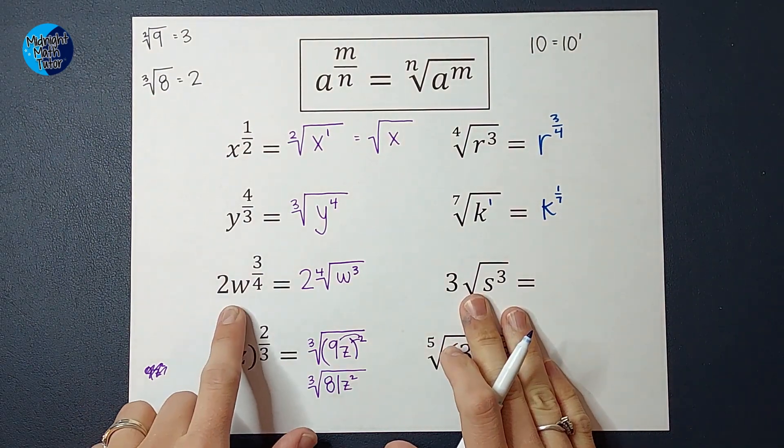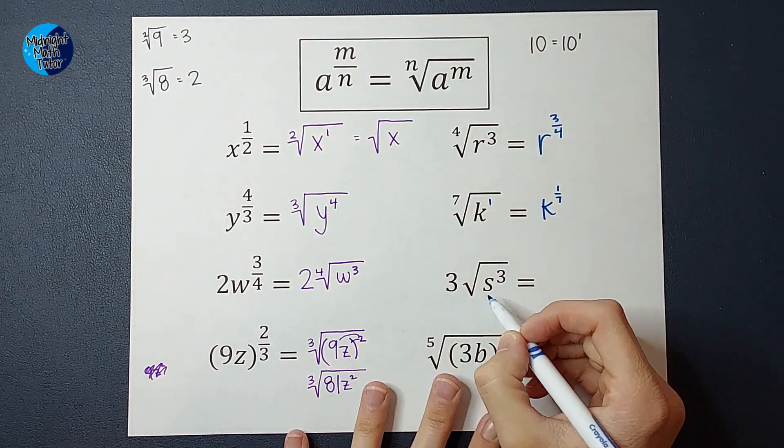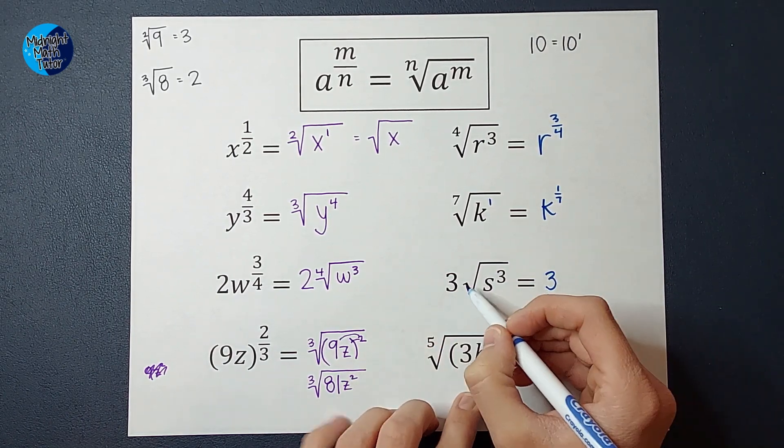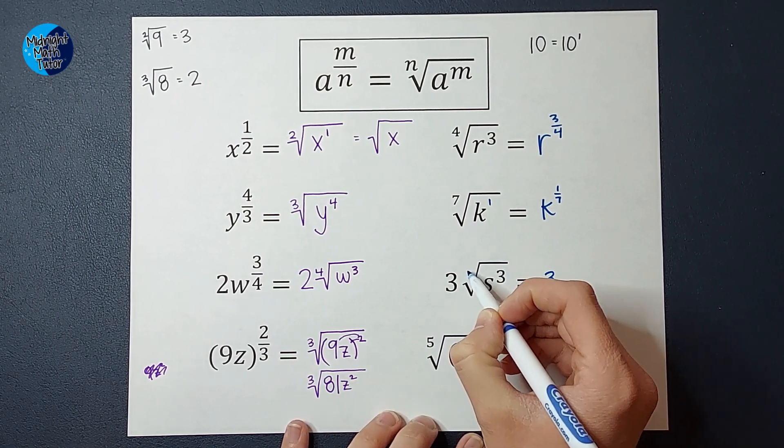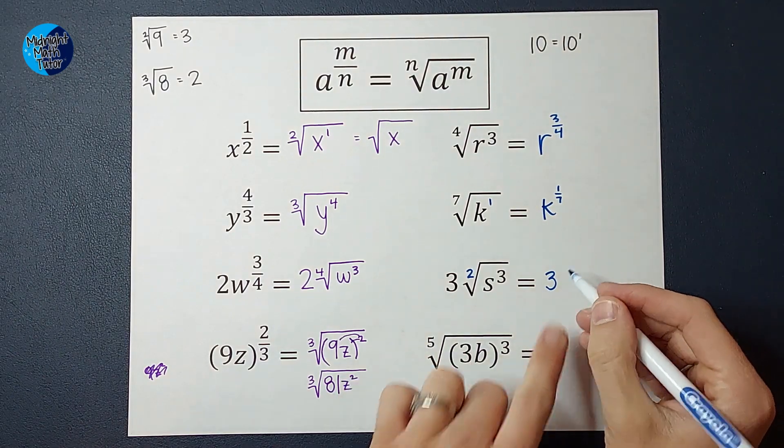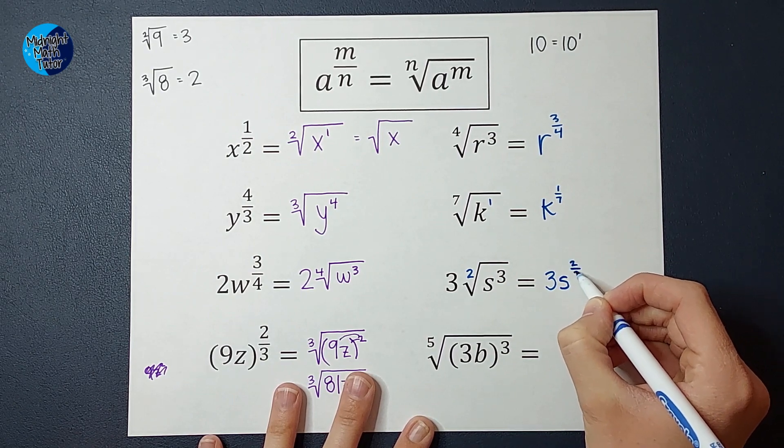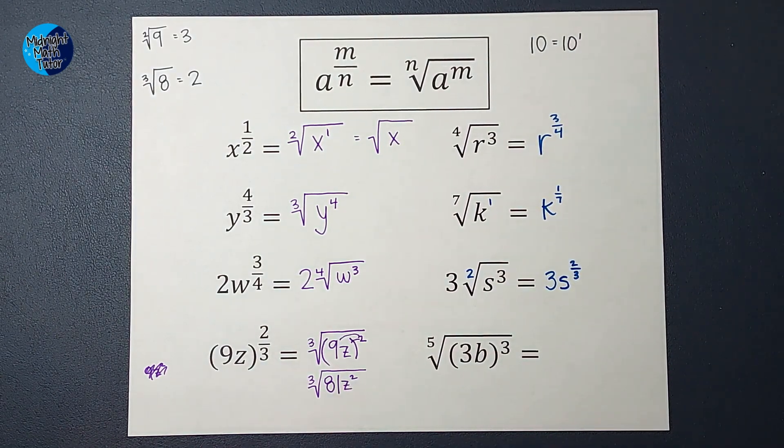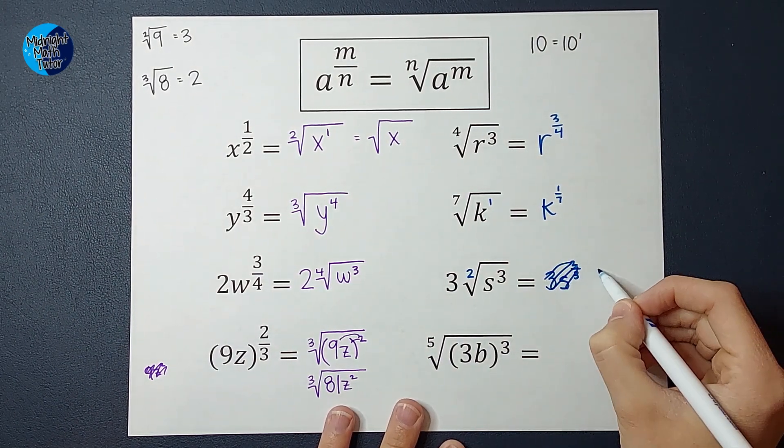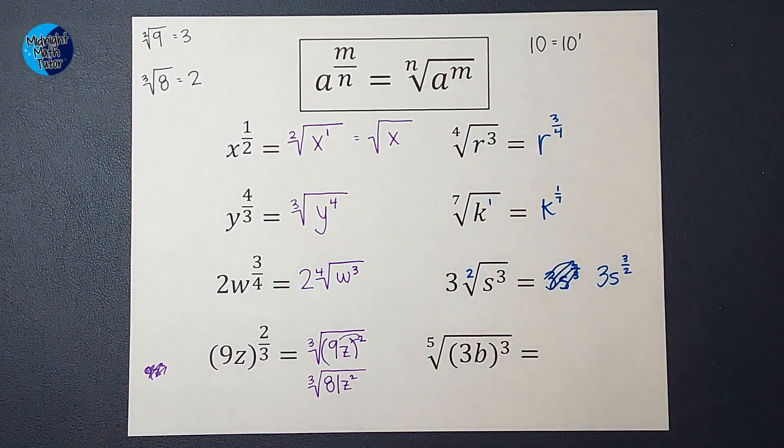Now this one is similar to this one where the 3 is just kind of off on its lonesome. It's just kind of out front. So we're going to have the 3 out front, and then we've got s to the third, and this is a square root. So there's really a 2 here. We just don't always write it. So this is going to end up being 3 times s to the... 3 halves power. It is 3s to the 3 halves power.